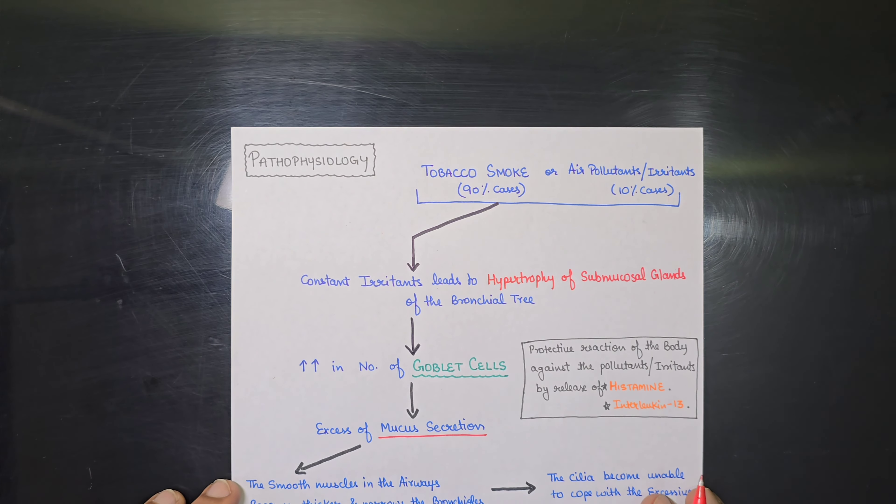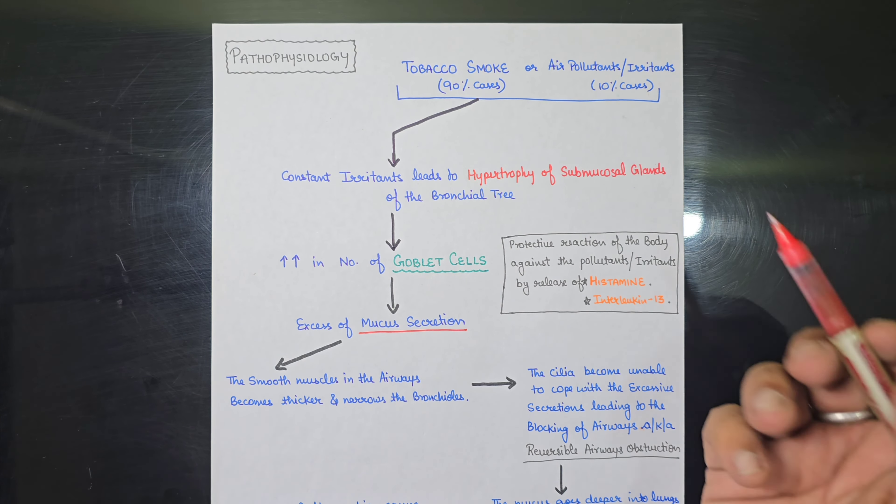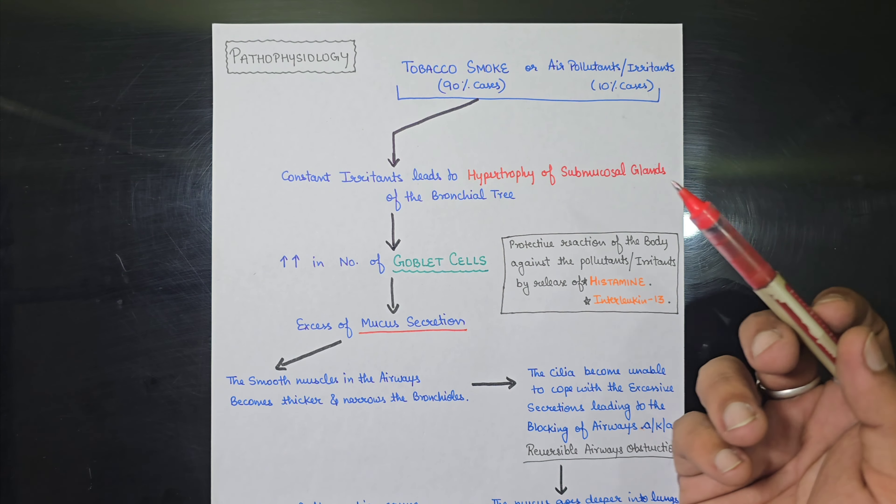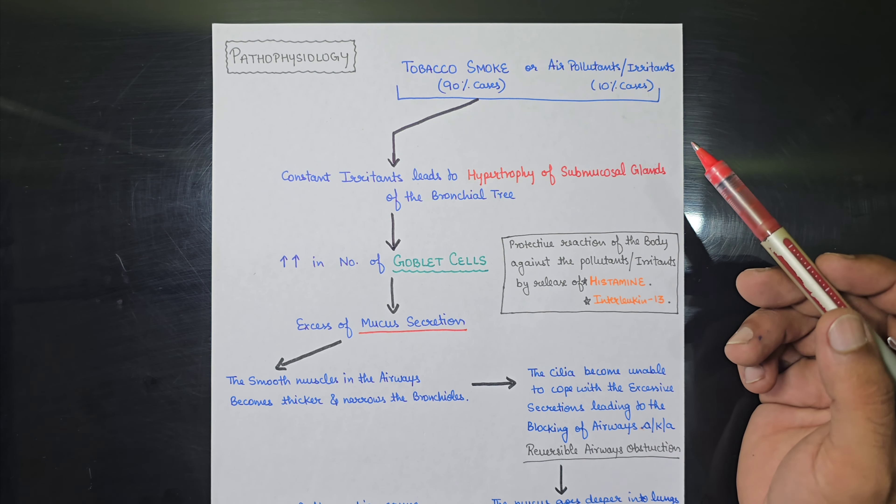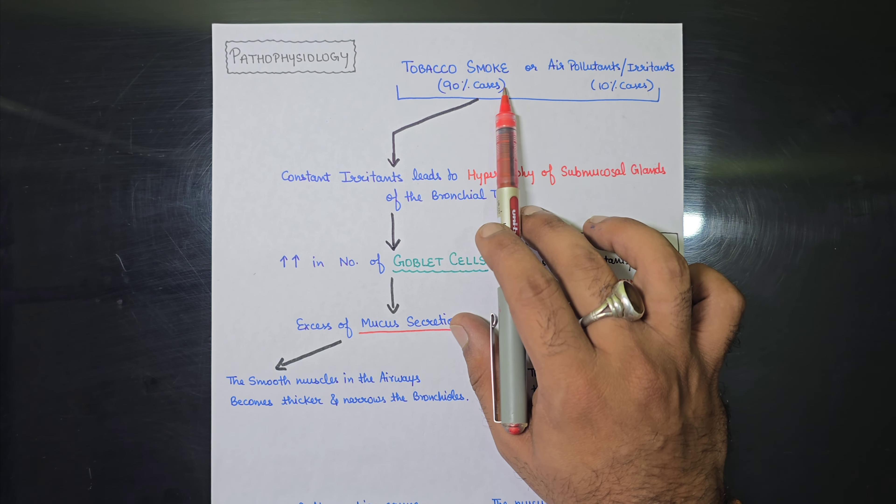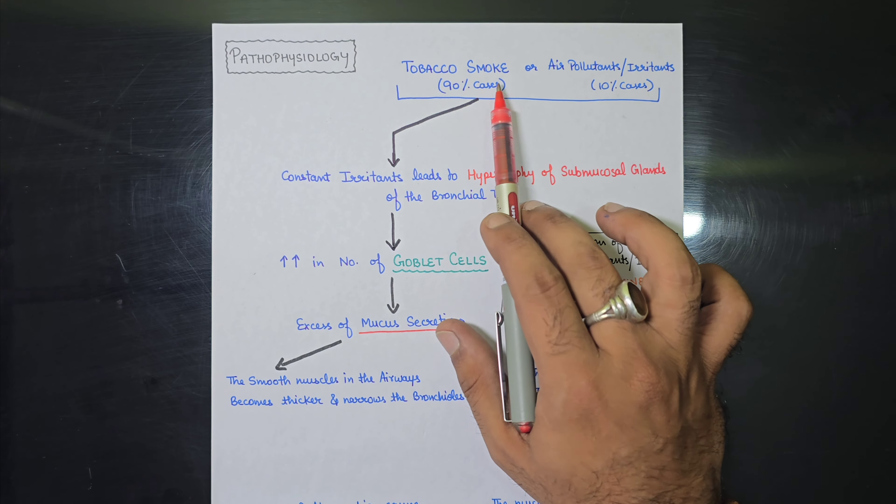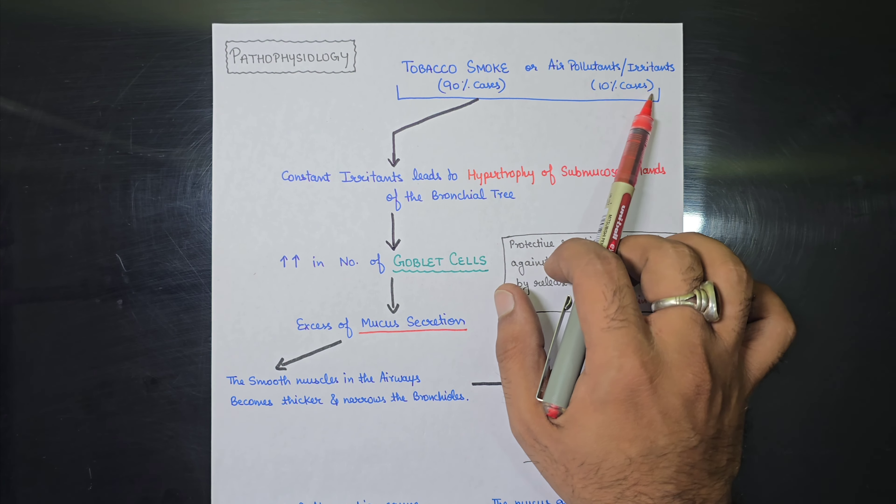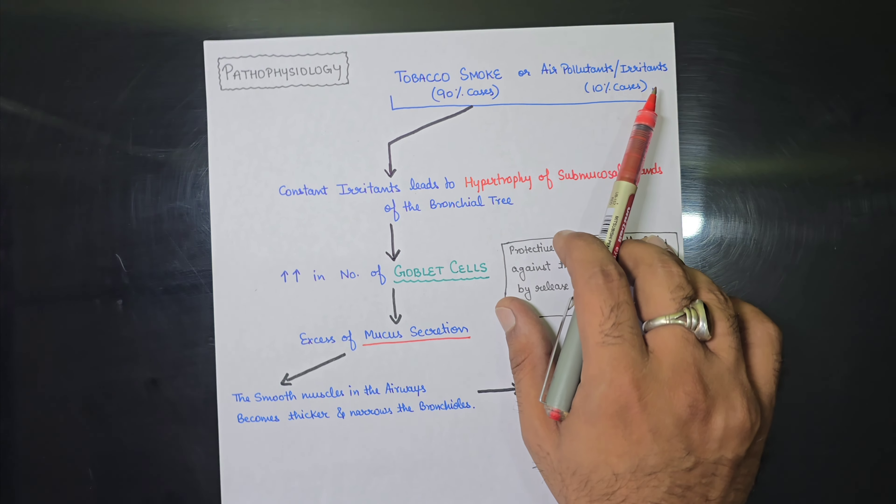So now let us go to the pathophysiology of this disease. So the pathophysiology, if a patient comes in the OPD or in the hospital, then in 90% of the cases, the patient with chronic bronchitis, the most common cause is tobacco smoke. Or in some 10% cases, it can also be due to air pollutants or irritants.